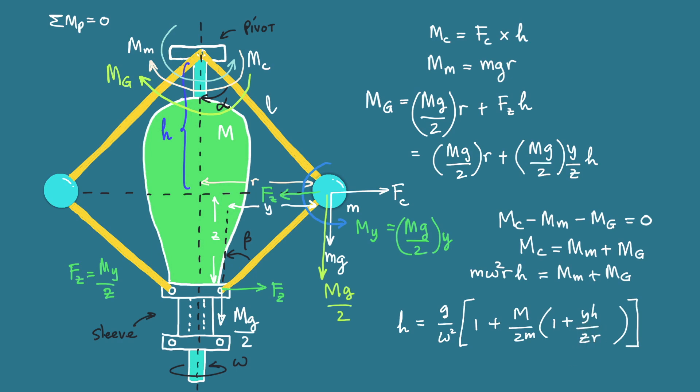This is actually Y over Z over R over H where Y over Z is tangent beta and R over H is tangent alpha. Let's replace this term with tangent beta over tangent alpha. If we look at these equations for H now, this g over omega squared is the equation for the Watt governor.